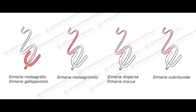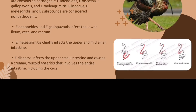Eimeria adenoides and Eimeria gallopavonis infect the lower ileum, ceca, and rectum, and these species often cause mortality. Eimeria meleagridis chiefly infects the upper and mid small intestine. Eimeria dispersa infects the upper small intestine and causes a creamy mucoid enteritis that involves the entire intestine including the ceca.